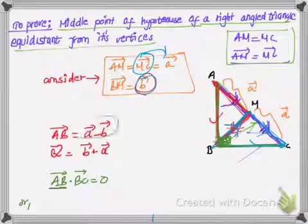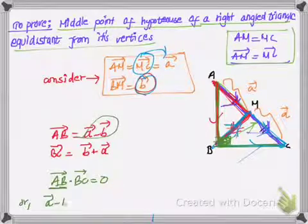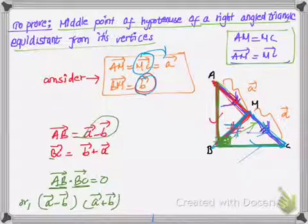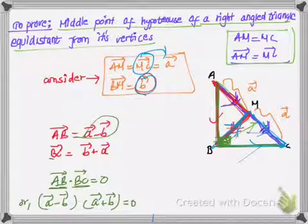Now let us plug in the value for AB, which is vector A minus vector B. Substitute the value for vector BC, which is vector A plus vector B. This should be equal to 0.